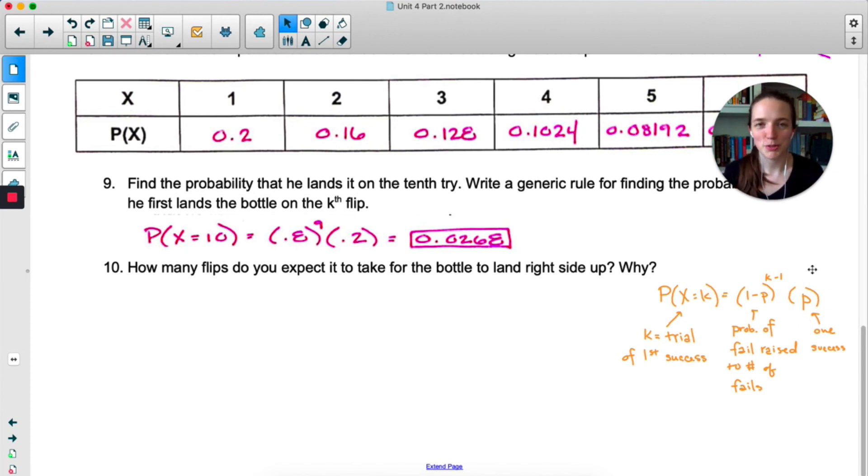For geometric distributions, I really don't think you need to memorize this. It's just common sense. We have this many failures and one success. That's it. We don't have to do this step in the binomial distributions where we had to figure out how many ways could we arrange these numbers of successes. Because we know the arrangement. It's all failures until the one success. How many flips do you expect it to take for the bottle to land right side up?